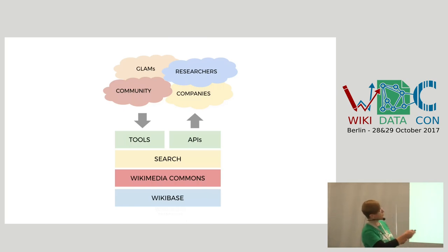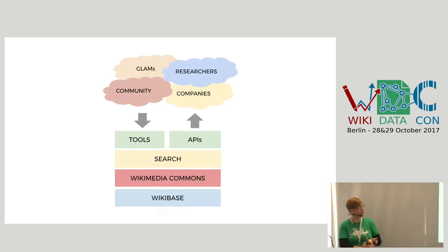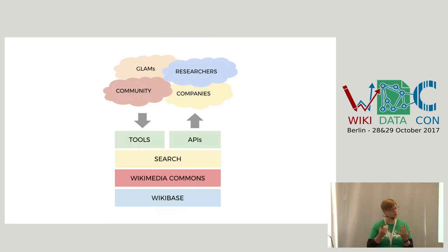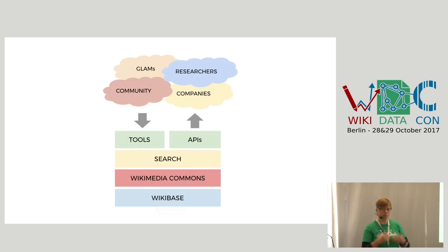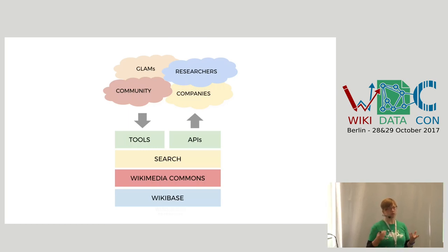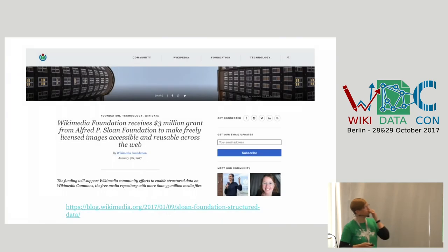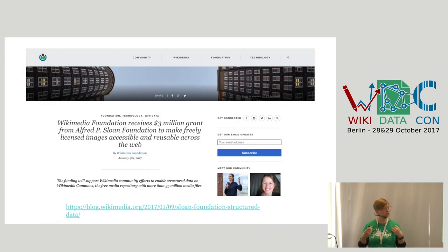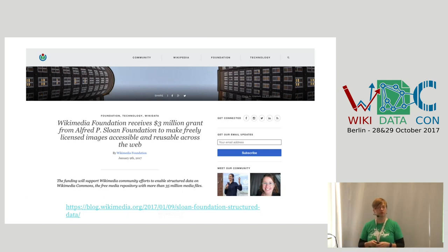These are our target groups — all the kinds of people who will either edit Commons or reuse images from Commons. That goes from the Wikimedia community itself, but also companies, journalists who want to reuse materials, and researchers. Commons will become a corpus of structured data, which is for research purposes quite interesting. We can do this thanks to a grant announced at the end of last year — we received a quite generous grant from the Sloan Foundation, who really believe in this project.